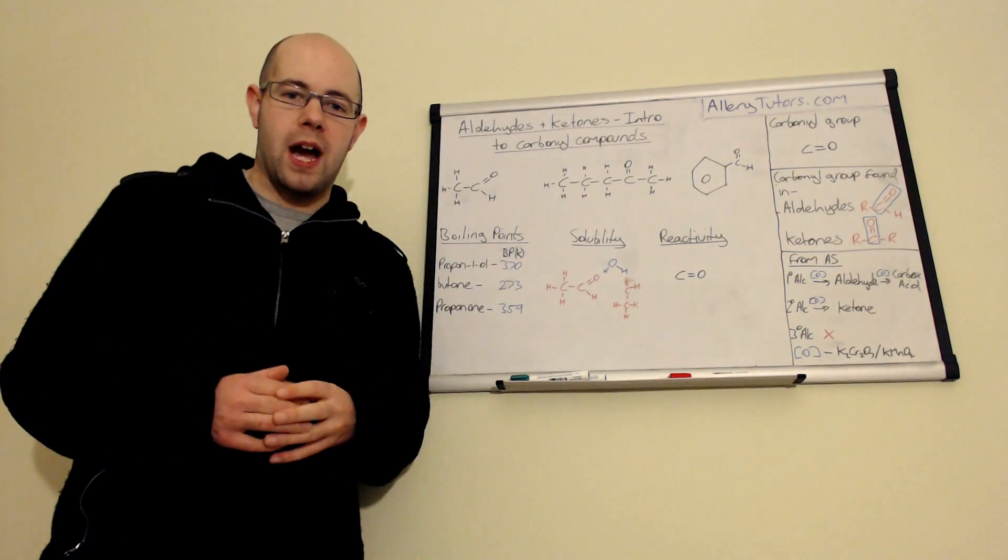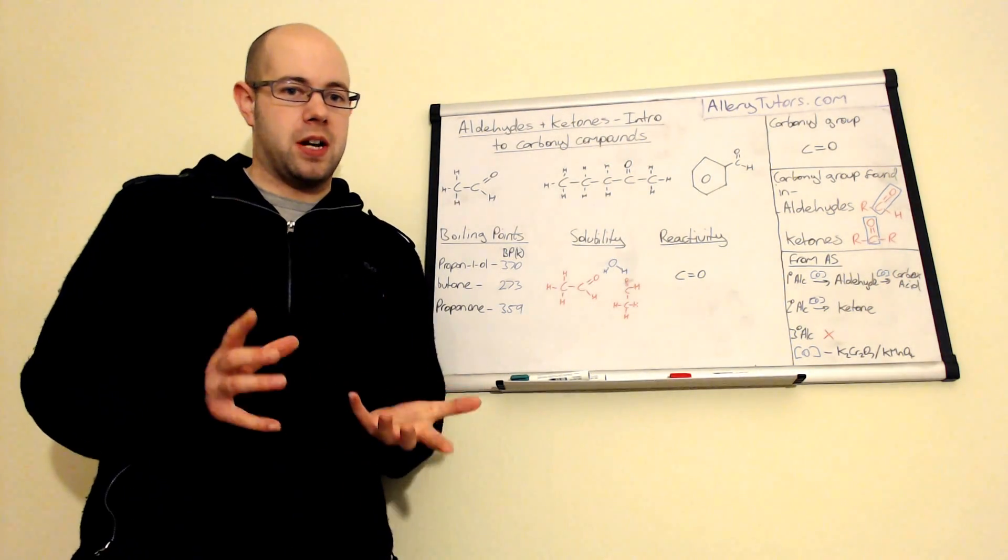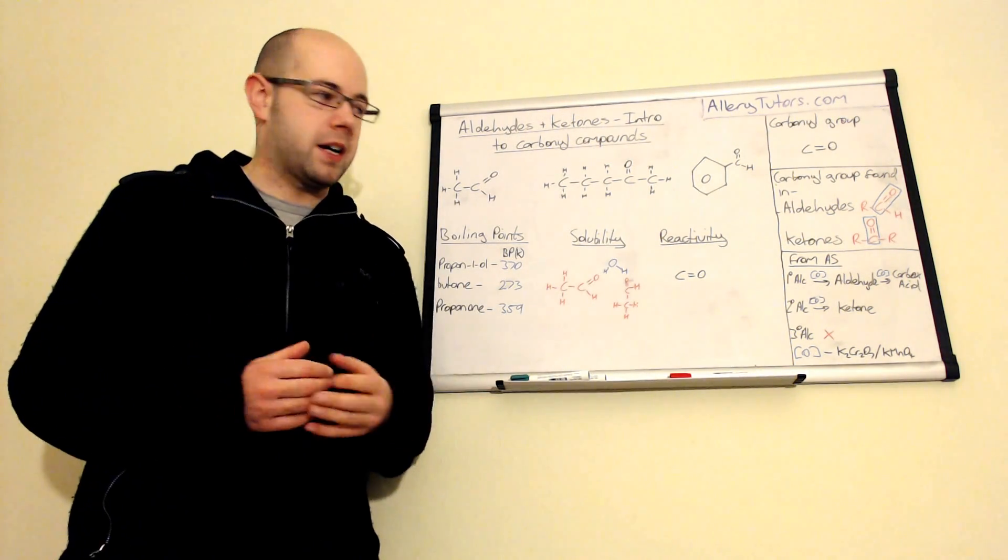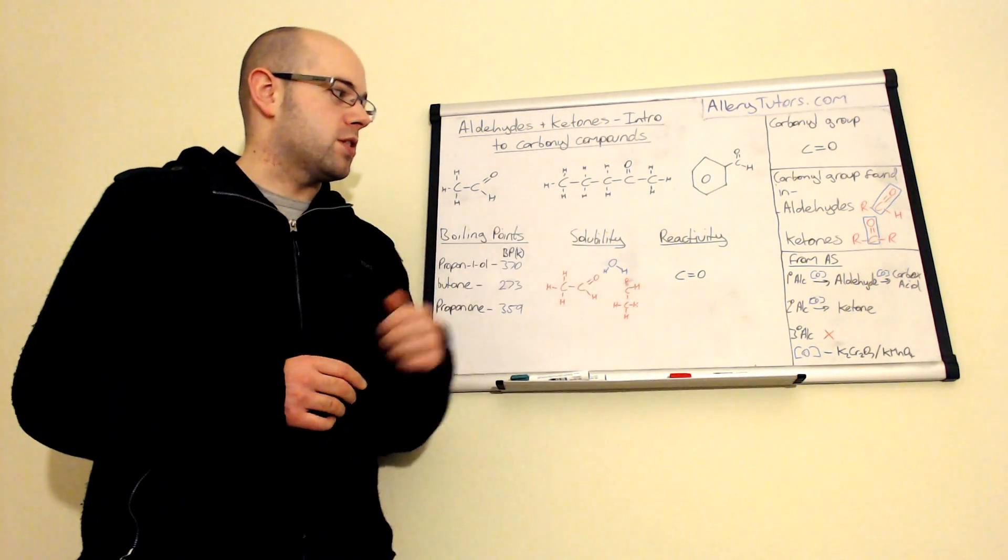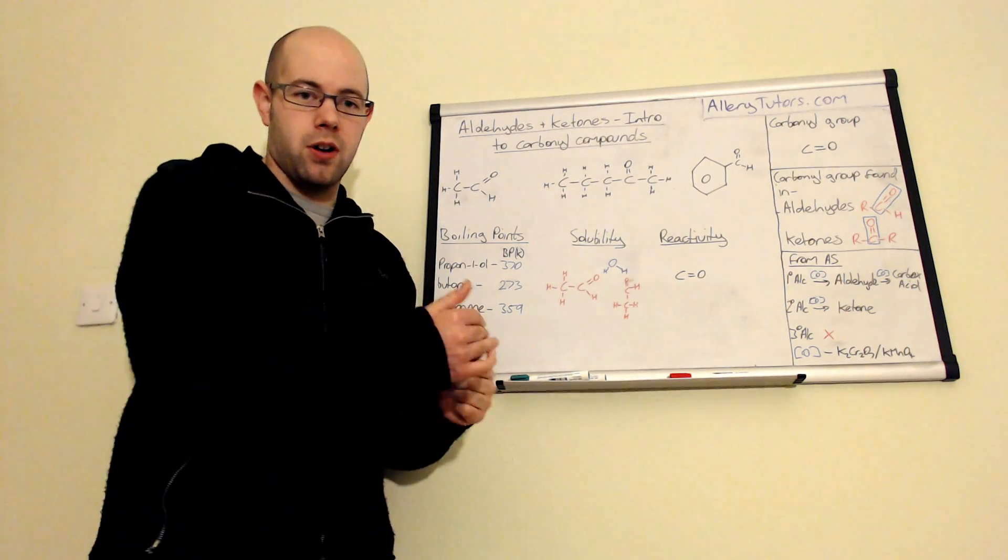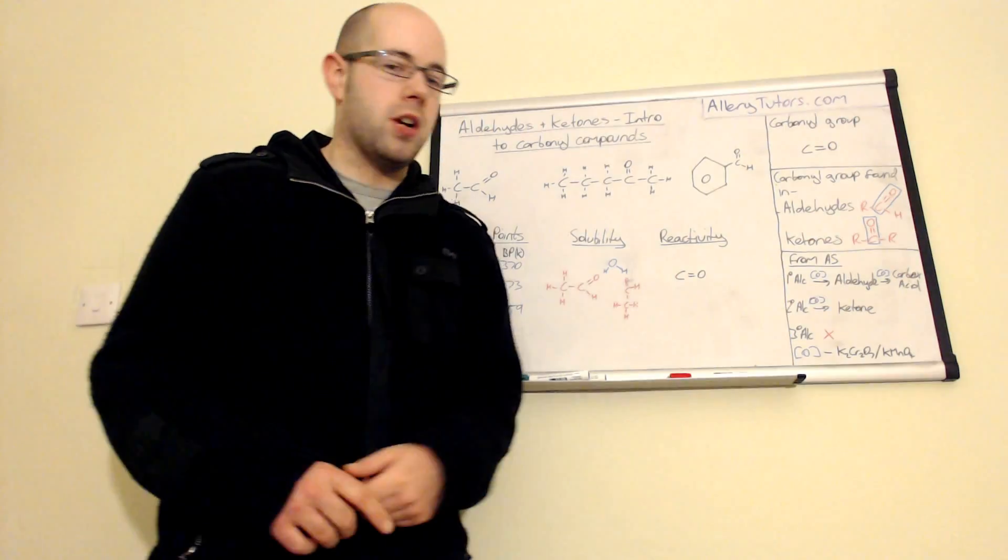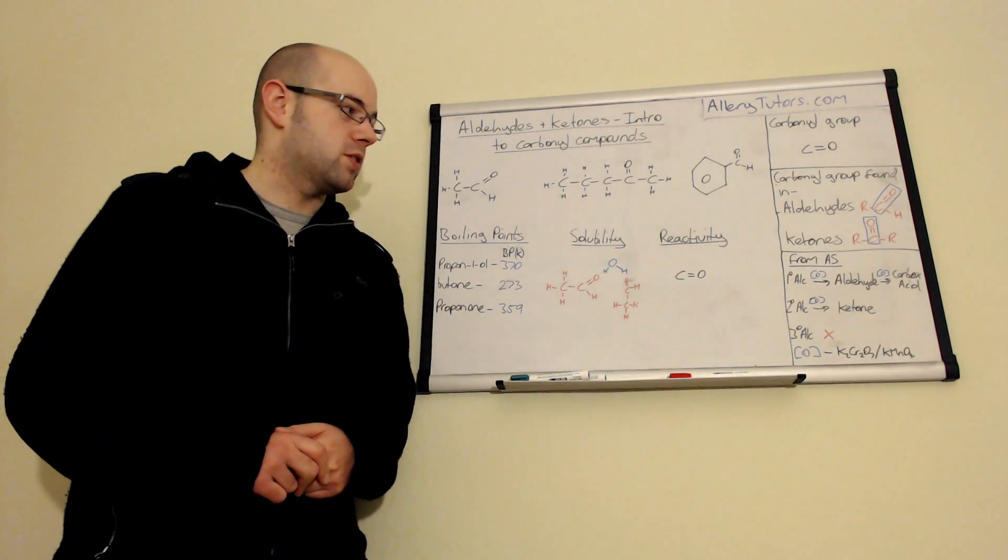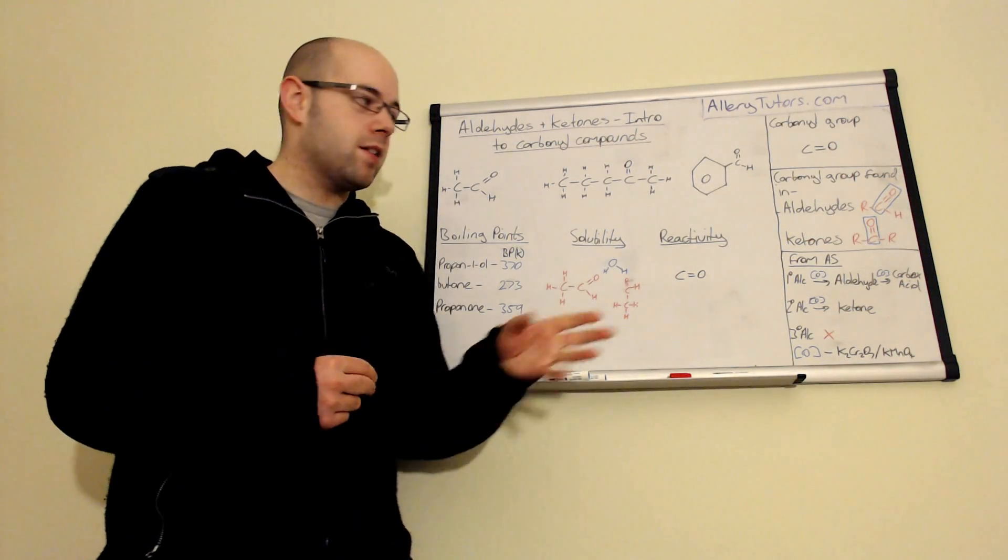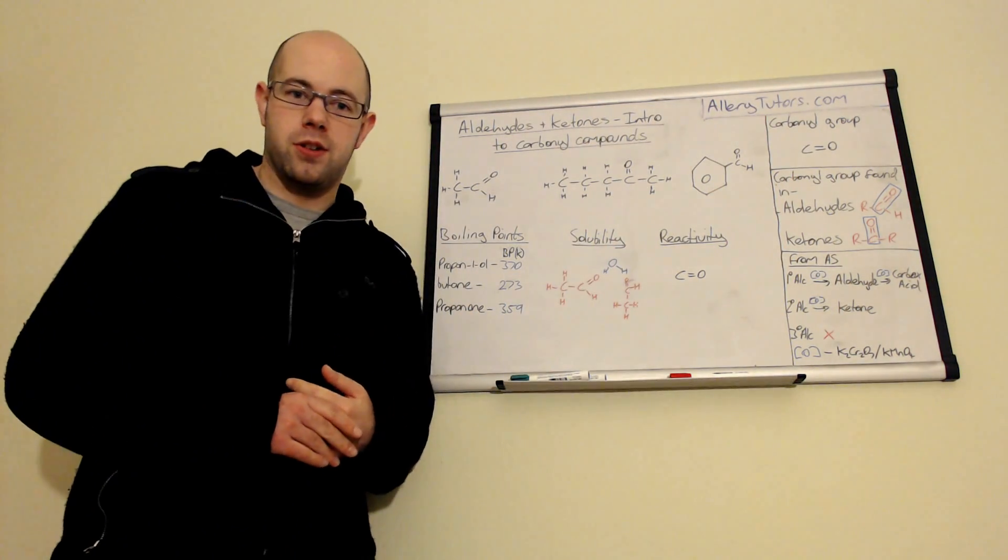An aldehyde is made from a primary alcohol. If you use an oxidizing agent such as potassium dichromate or potassium permanganate, then you can oxidize it to an aldehyde under distillation. If you were to oxidize it further in reflux conditions, you can produce the carboxylic acid. If you take a secondary alcohol and oxidize that, you can make a ketone. Tertiary alcohols don't oxidize at all.